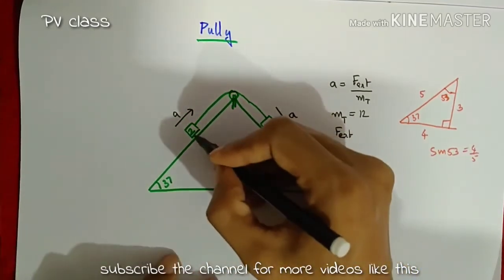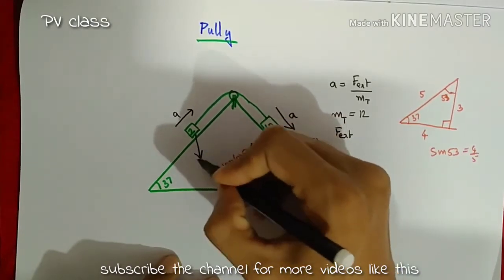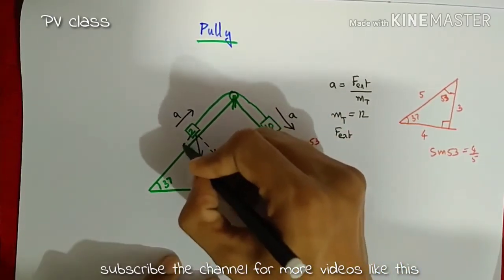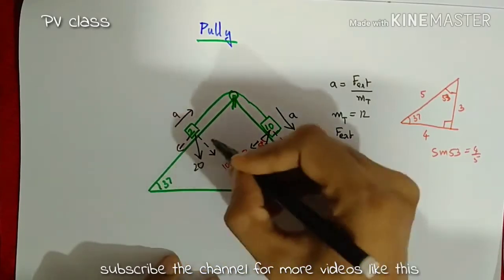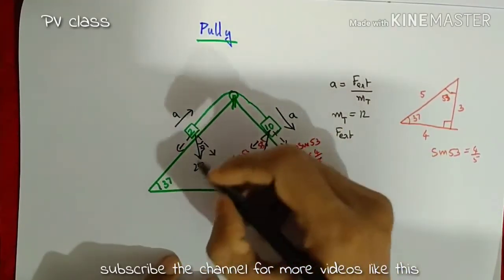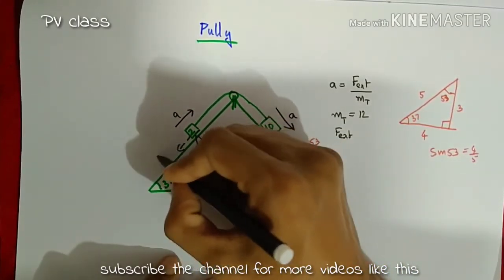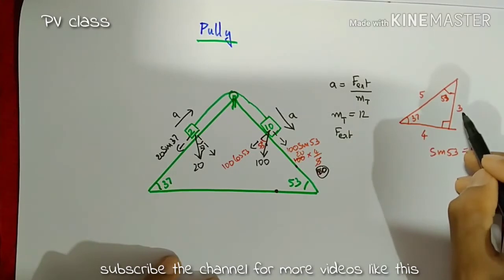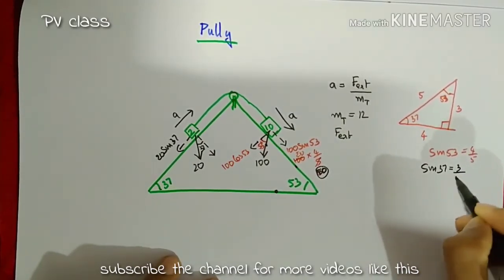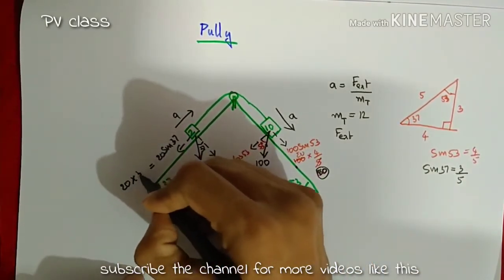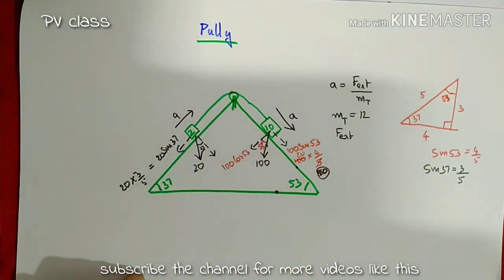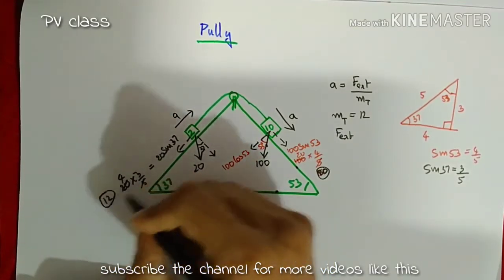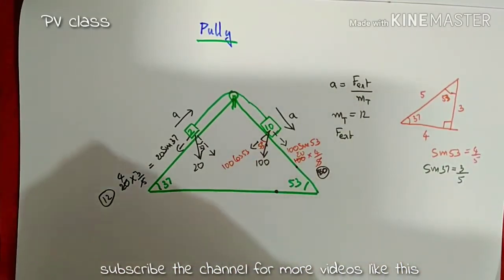Now for the 2 kilogram mass: it experiences a gravitational force downward of 2g, which is 20 Newton. This 20 Newton resolves into components; since the angle on this side is 37 degrees, the component along the incline is 20 sin 37. From the magic triangle, sin 37 equals 3/5, so 20 into 3/5 gives 12 Newton.